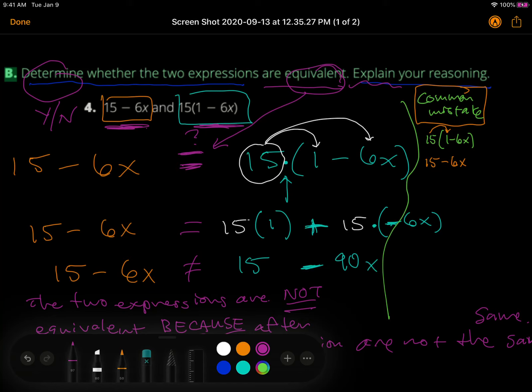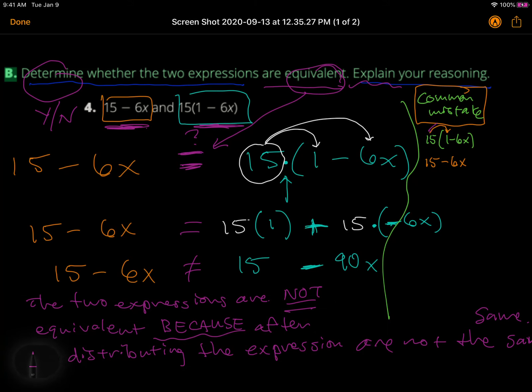And then they're going to say, 15 minus 6x is the same thing as the one on the left side. So they are equivalent. And again, it's wrong because they're missing this pink here of distributing to the second term.